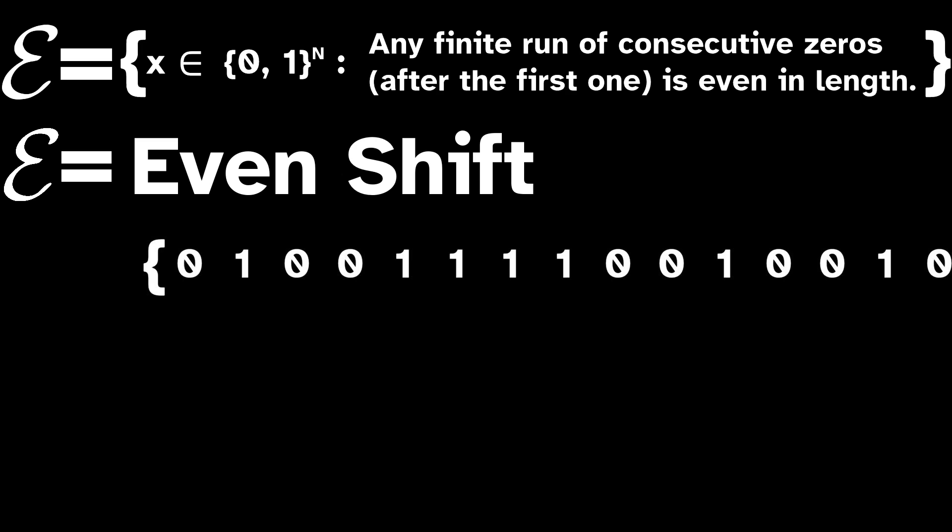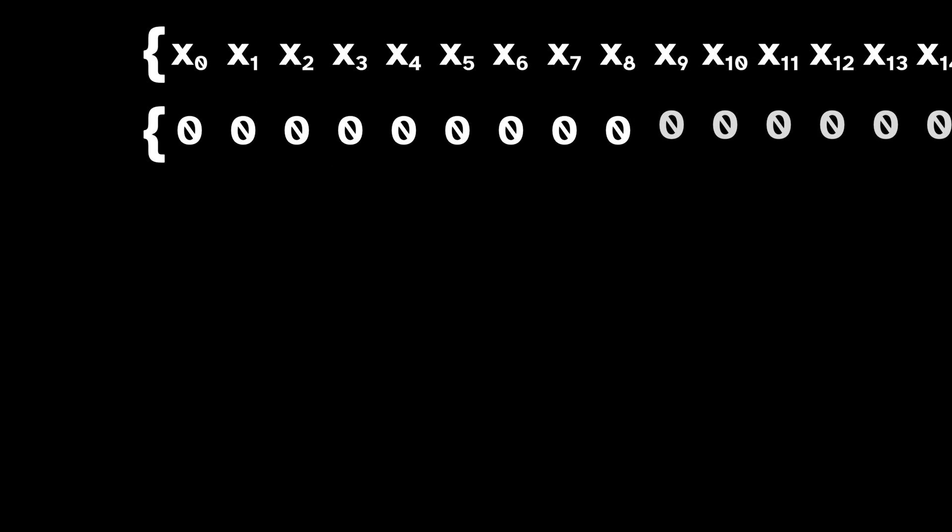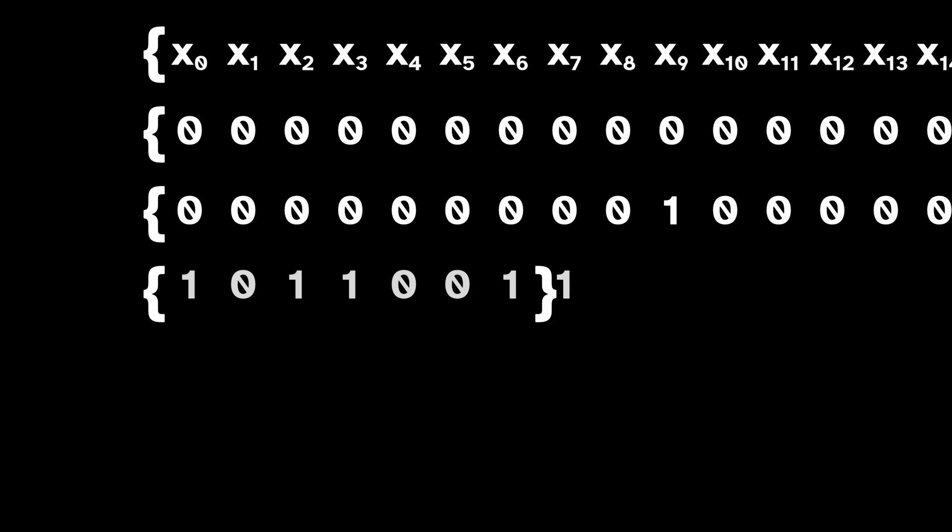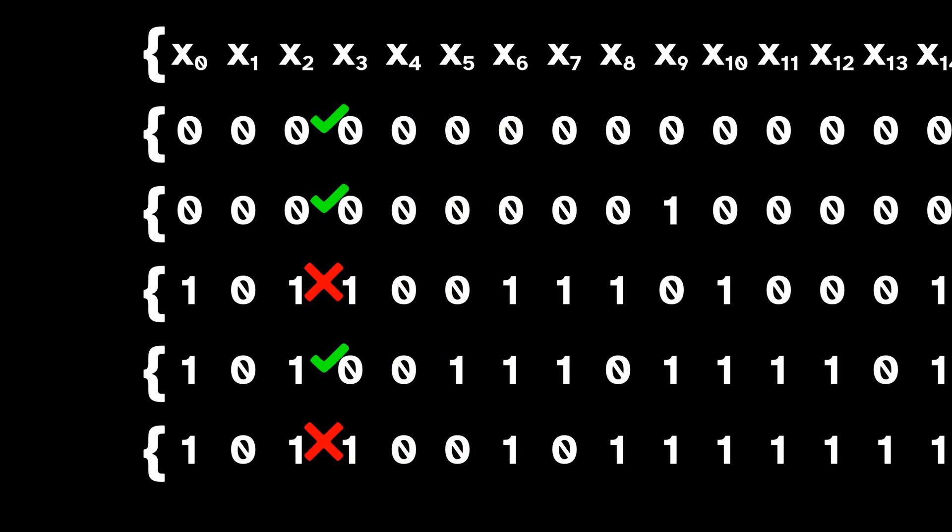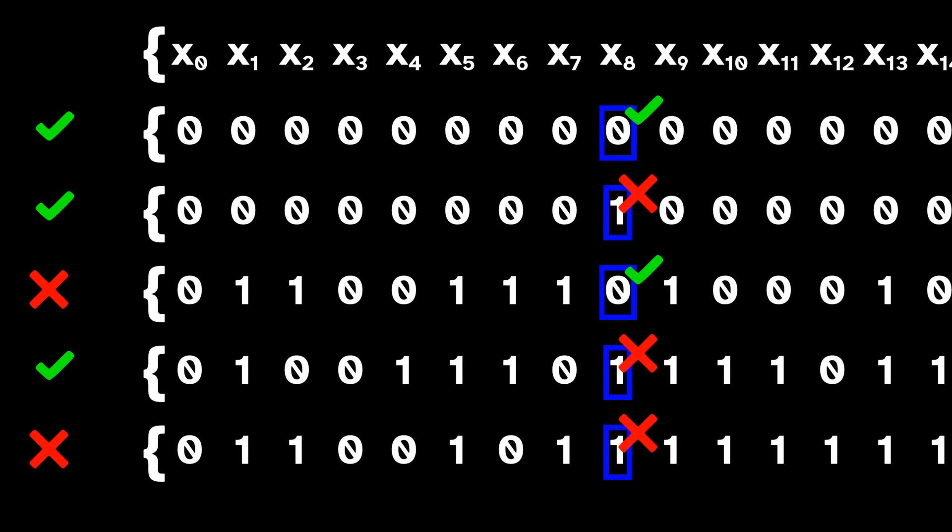Let's see an example of a rule which does not specify a subshift. The rule, the 8th symbol is 0, is not shift invariant. To see why, let's take these five example sequences. In some sequences, the 8th symbol is 0, but when we shift them, which ones satisfy the rule changes, because the rule isn't shift invariant.